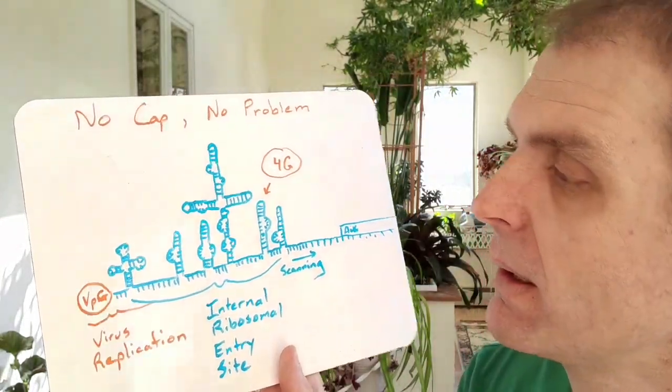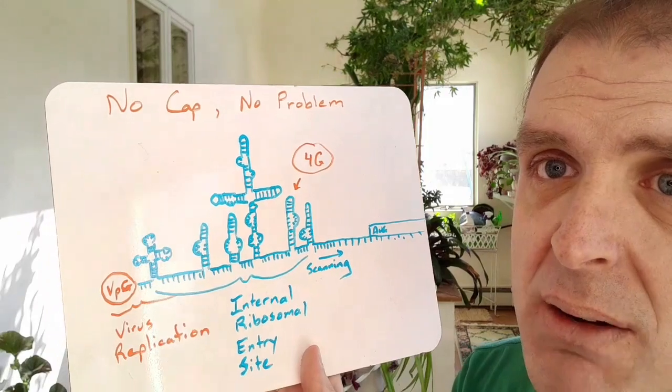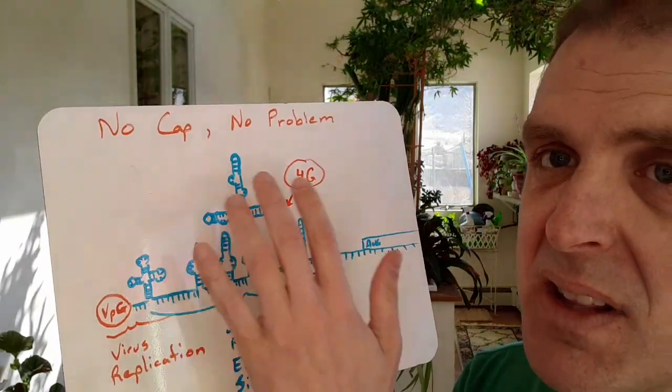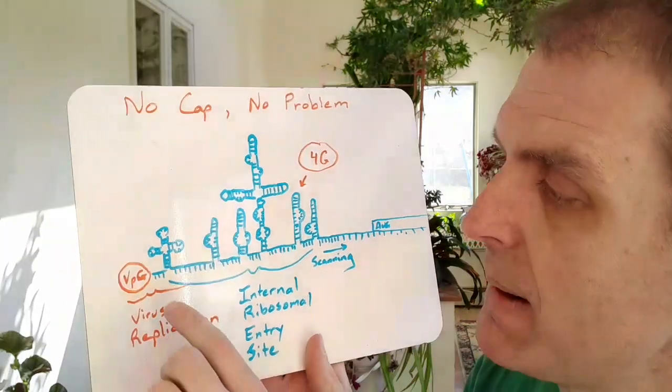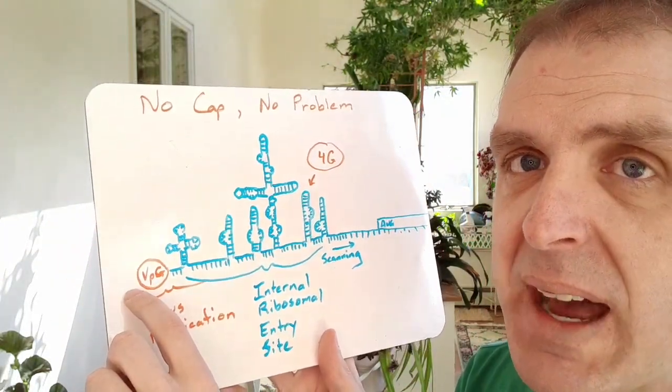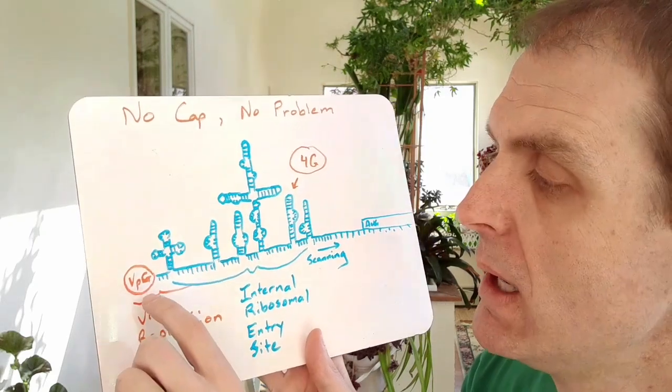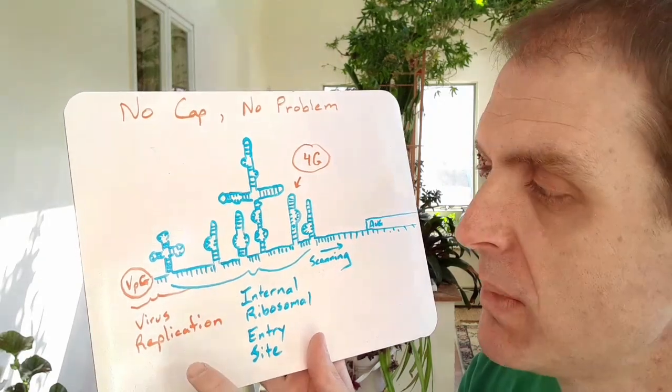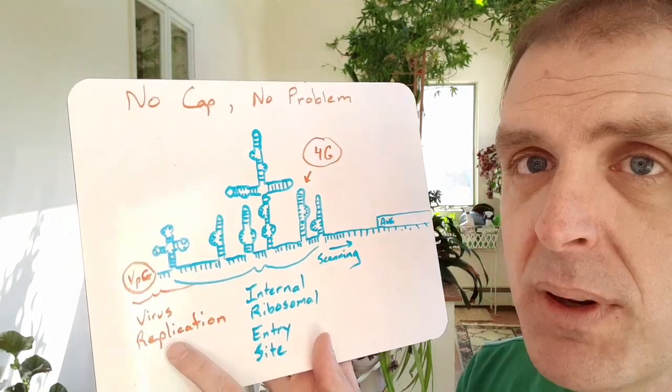I basically copied the IRES, very poor copy but you get the idea. There's a lot of secondary structure in the RNA. It has a protein at the five prime end instead of that cap structure that we're used to seeing at the five prime end. That protein is called VPG for viral protein genome linked and in polio virus it's involved in virus replication.